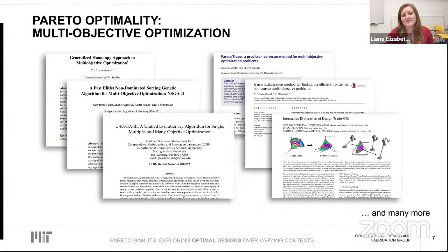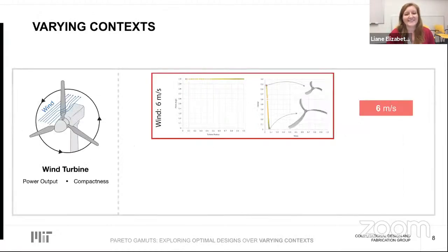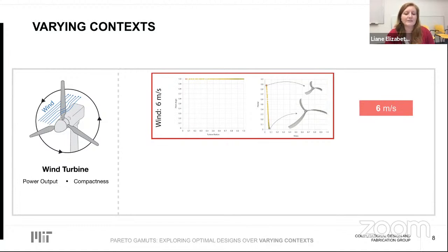There is already a rich history of related work trying to find the Pareto front faster or with higher density. However, this standard multi-objective optimization setup doesn't quite capture real-world scenarios because it only produces designs optimal with respect to some specific, known set of assumptions — what we call the context. For the wind turbine, the context might be the wind speed at the installation site, embedded as a constant in the performance metric. The optimization produces a Pareto set corresponding to some particular wind speed, say 6 meters per second.